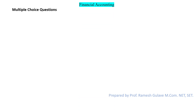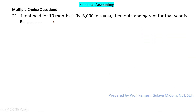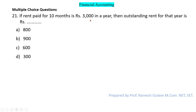The next question says: if rent paid for 10 months is Rs. 3,000 in a year, then the outstanding rent for that year is? Since 10 months' rent is Rs. 3,000, dividing 3,000 by 10 gives Rs. 300 per month. Two months' rent is outstanding, so 300 × 2 = Rs. 600. So option C — Rs. 600 — is the right answer. This is a simple calculation question on outstanding rent.